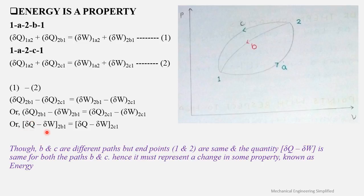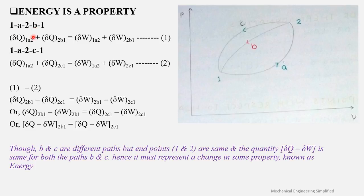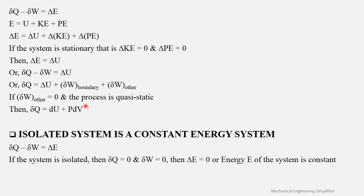Since the endpoints are the same and (δQ − δW) is the same for both paths, this quantity must represent a change in some property. That property is known as energy. So the two important conclusions from the first law are: heat transfer is a path function, and energy is a property.